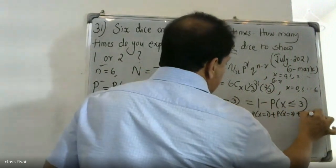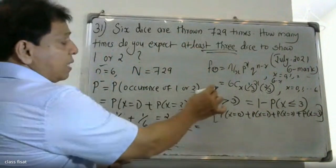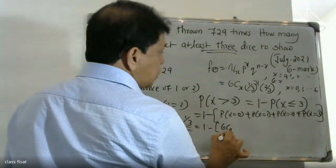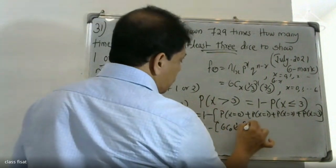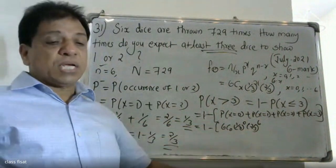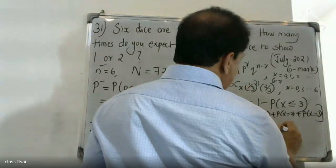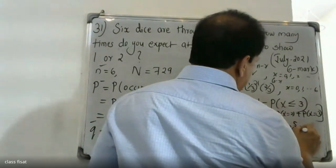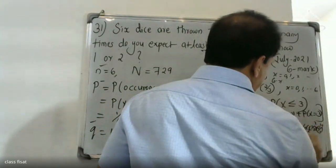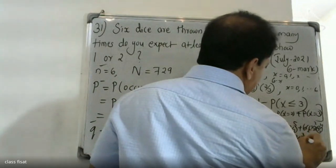That equals 1 minus [P(X=0) + P(X=1) + P(X=2)], which expands to: 1 minus [6C0 × (1/3)^0 × (2/3)^6 + 6C1 × (1/3)^1 × (2/3)^5 + 6C2 × (1/3)^2 × (2/3)^4 + 6C3 × (1/3)^2 × (2/3)^3].